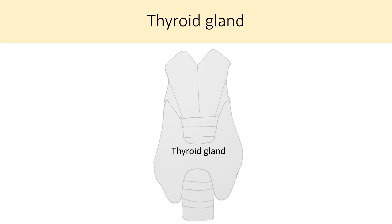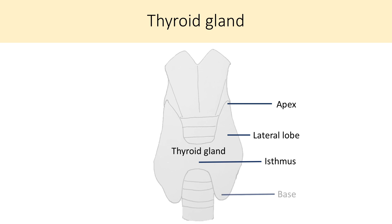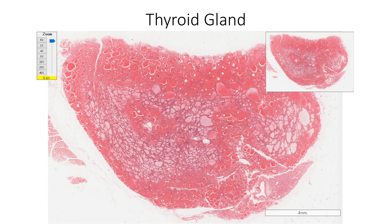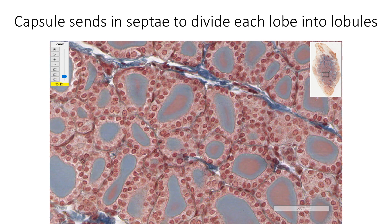The thyroid gland is located in the anterior part of the neck. It is butterfly-shaped with a central isthmus connecting the two lateral lobes. Each lateral lobe has an apex and a base which extends from the oblique line of thyroid cartilage above to the fourth or fifth tracheal cartilage below. The thyroid gland is covered by a capsule, and this capsule sends in septae — as we are seeing in this Mason's trichrome stain section — which divides each lobe into irregular lobules.